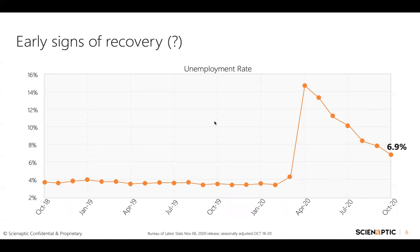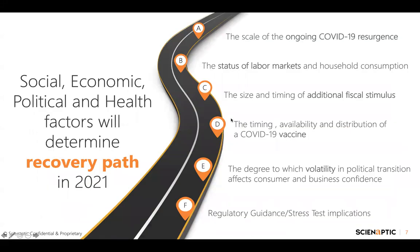I would say all these responses could very well be true because at this point we indeed do not know where the economy is going to head. Looking ahead, the recovery path in 2021 is going to be determined by a slew of factors ranging from social, economic, political, and health. We wish the path for recovery is as straightforward as it may get; however, all these determinants are going to shape the economy in a very convoluted way.